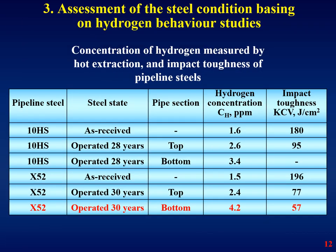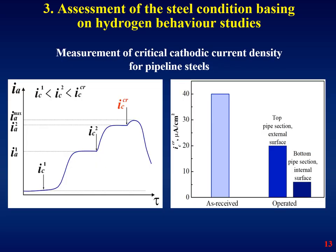As you can see on this slide, a decrease of brittle fracture resistance is in good agreement with hydrogen concentration in the metal — higher hydrogen concentration corresponds with a lower level of impact strength.